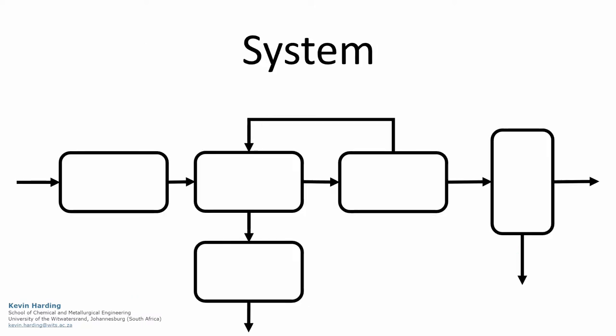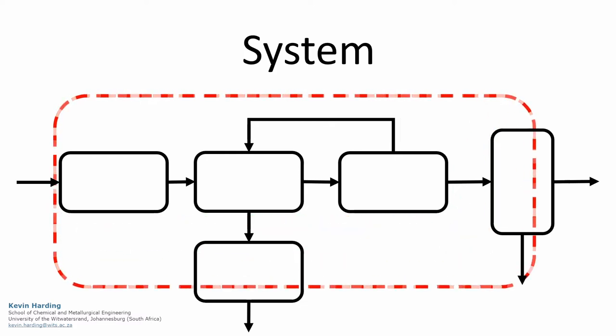In chemical engineering, the decision on where to place the system may depend on the problem being solved or the available data. The boundary may be placed around a single unit, a few units that may include a recycle, or over the entire process.